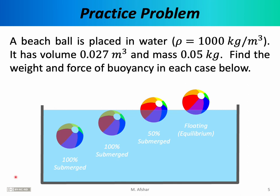Let's do a practice problem to better understand the interaction between weight and the buoyant force. A beach ball is placed in water. The density of water is 1,000 kilograms per cubic meter — a pretty important number you should memorize. The beach ball has a volume of 0.027 cubic meters and a mass of 0.05 kilograms, so it's a relatively light object. We need to find the weight and force of buoyancy in each of four scenarios: scenario one has the ball 100% submerged at depth; scenario two has it 100% submerged just below the waterline; scenario three has it half underwater; and scenario four has it in equilibrium.